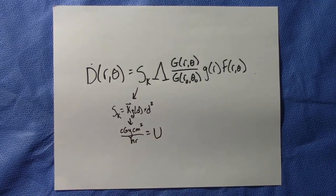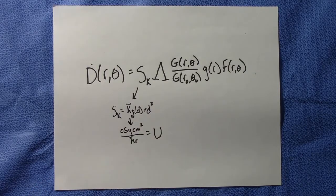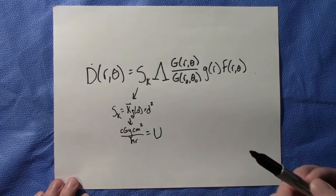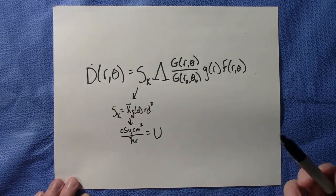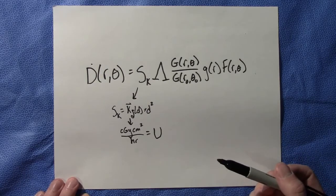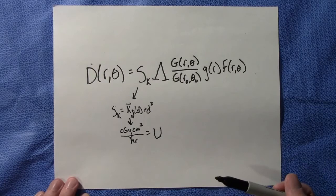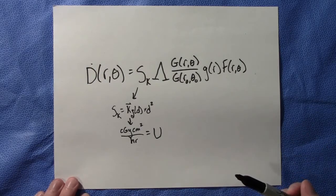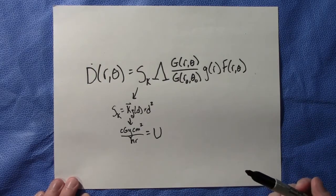Now this air kerma strength is found by NIST using a wide angle free air ionization chamber and you can find that from the manufacturer that you purchase the isotope from.